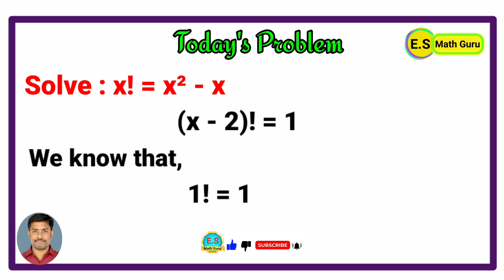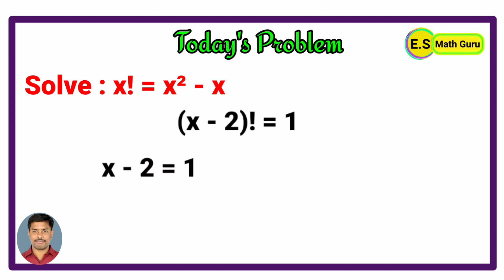Dear friends, we know that 1 factorial equals 1 and also 0 factorial equals 1. So the value of (x minus 2): x minus 2 equals 1 or x minus 2 equals 0.